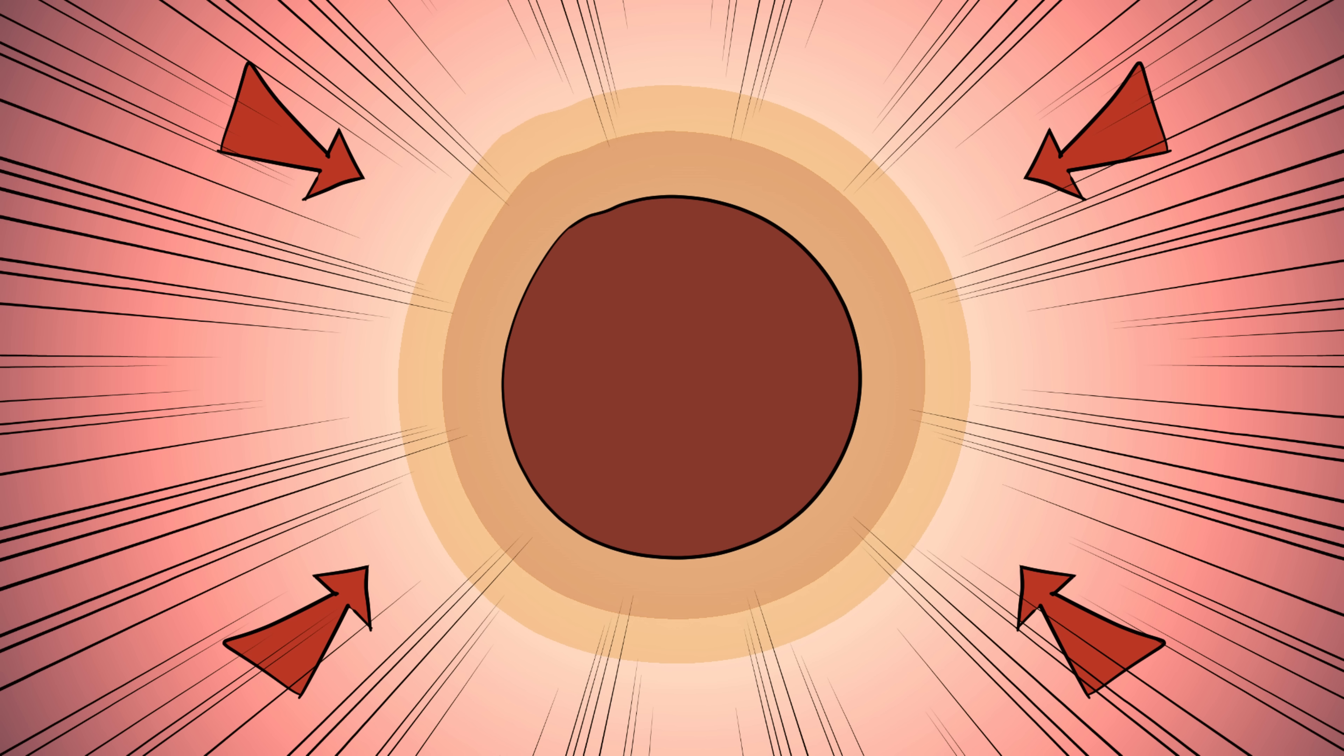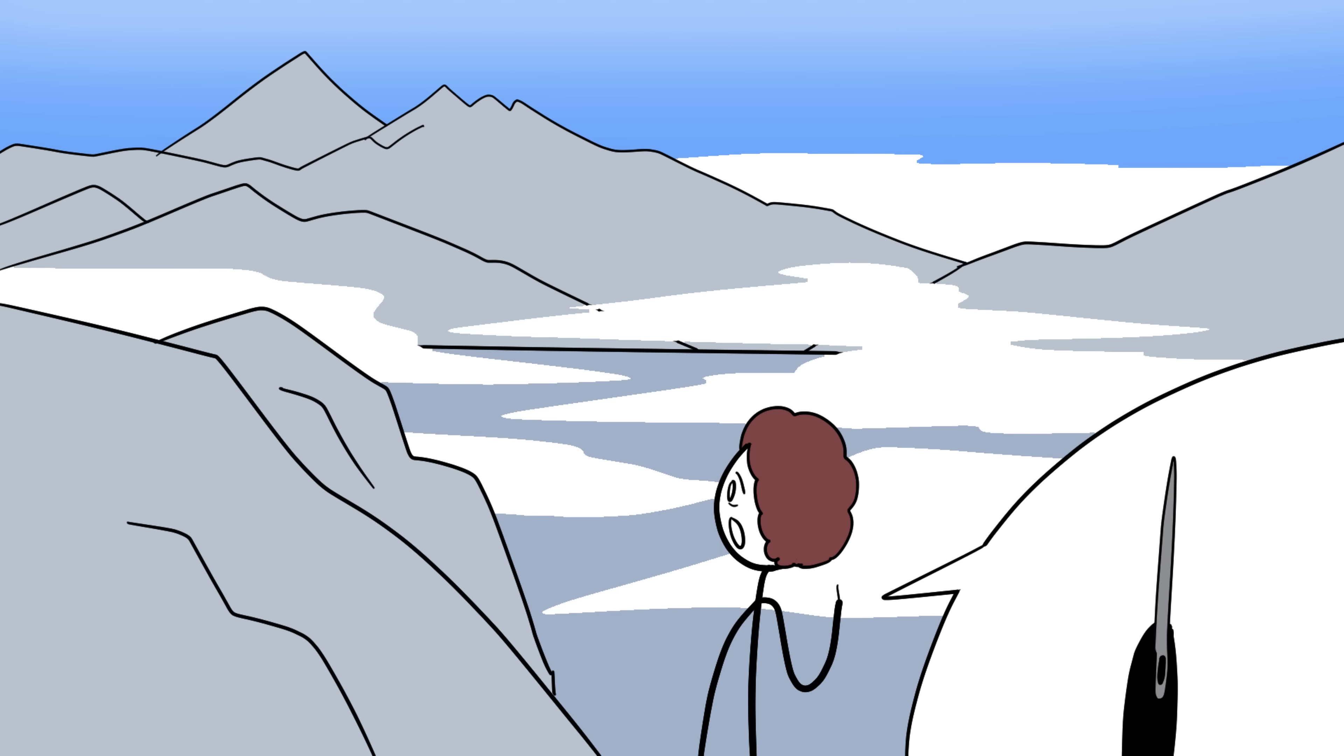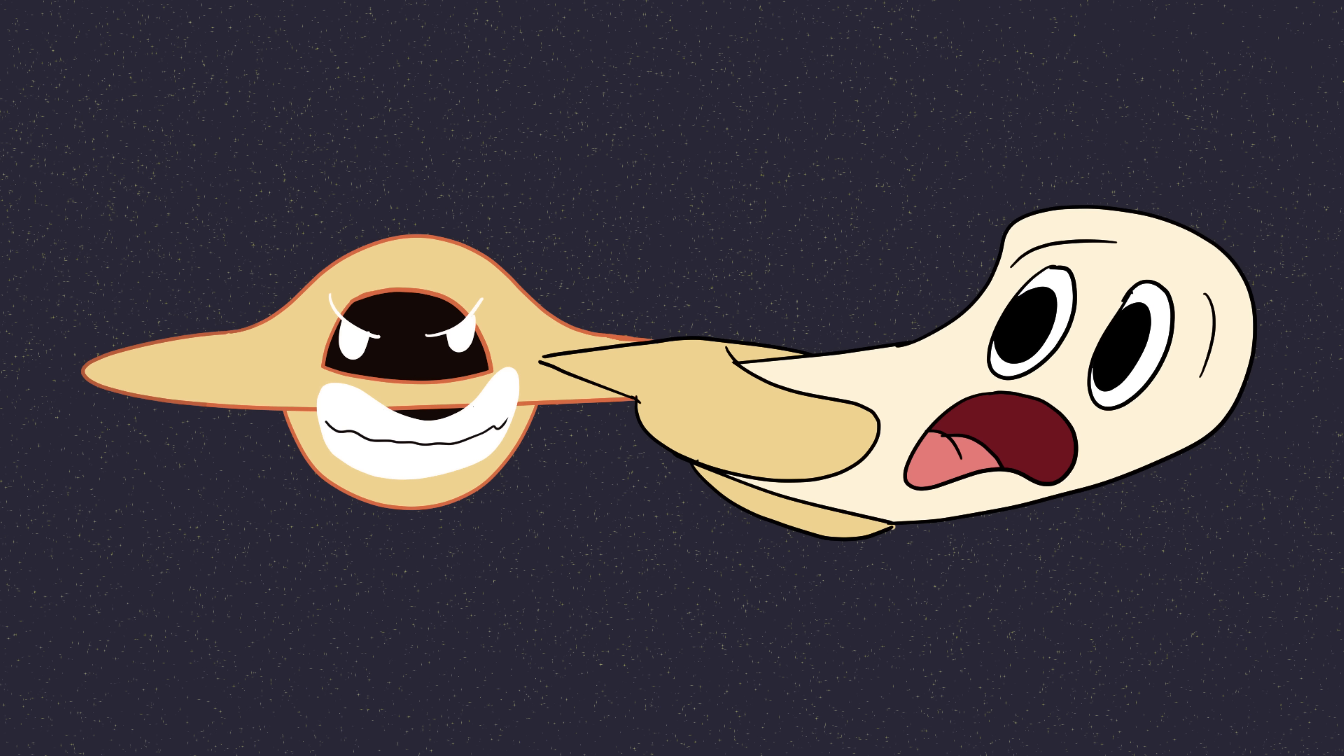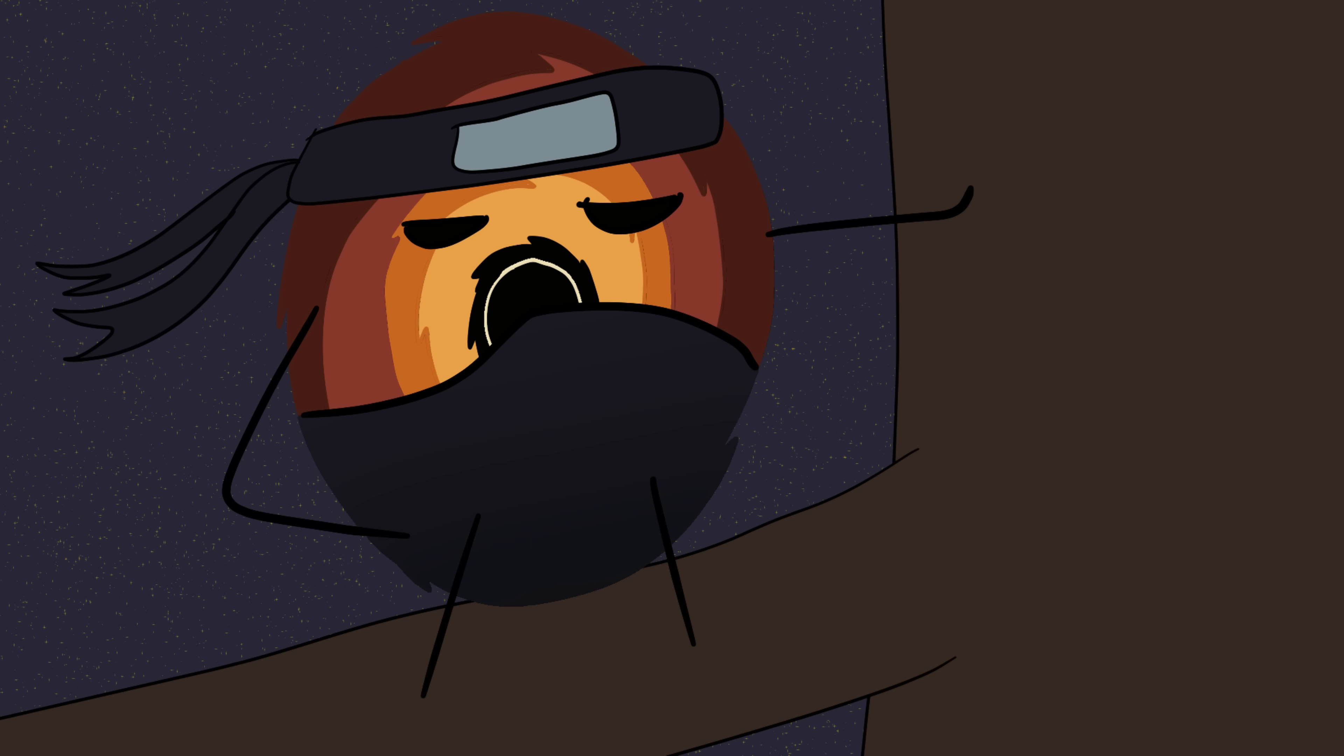They're born when giant stars collapse under their own weight, creating a singularity, a point of infinite density. That's like cramming Mount Everest into the size of a pinhead. And the gravity? So powerful that not even light can escape. That's why they're invisible like cosmic ninjas waiting in the dark.